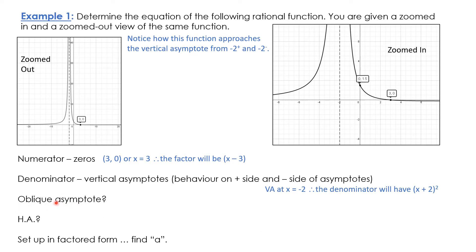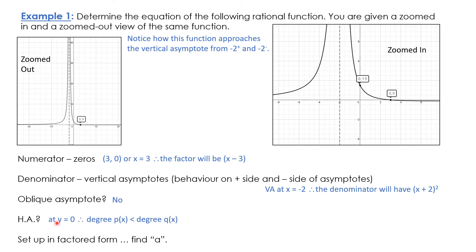Does it look like there's an oblique asymptote? No, there isn't. Does it look like there's a horizontal asymptote? It does look like there's one at zero, but the graph goes below the x-axis. Remember that horizontal asymptotes can be crossed — it's not uncommon. Horizontal asymptotes define the end behavior of the function; in the middle where things are changing rapidly, the function could cross a horizontal asymptote, but at the ends it won't. So we have a horizontal asymptote at y equals zero. That means the degree of the numerator has got to be less than the degree of the denominator.